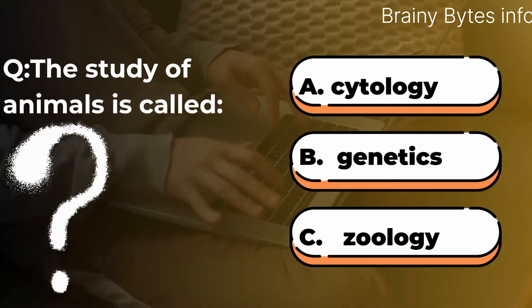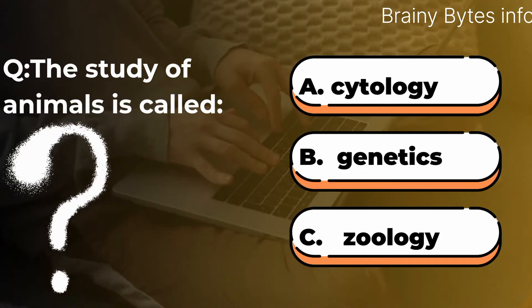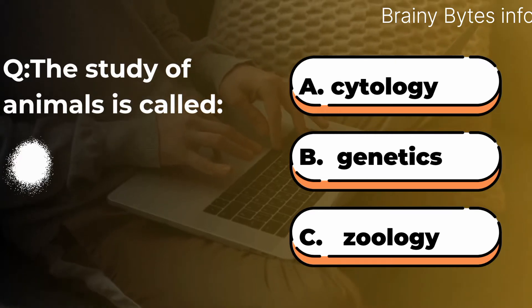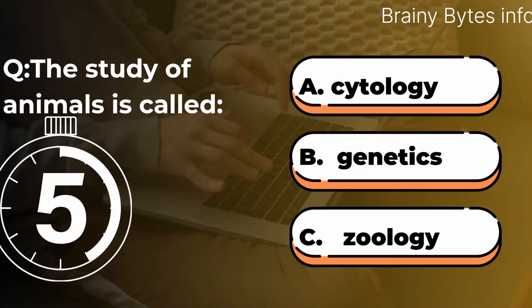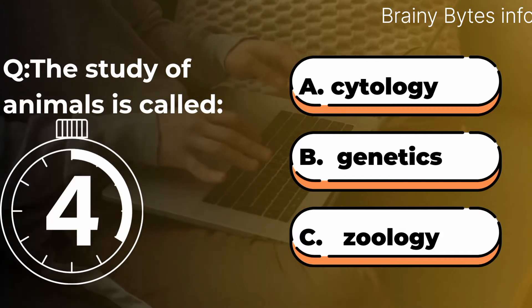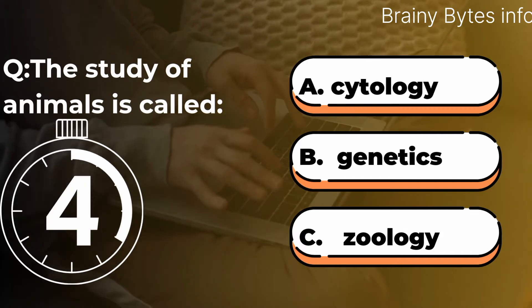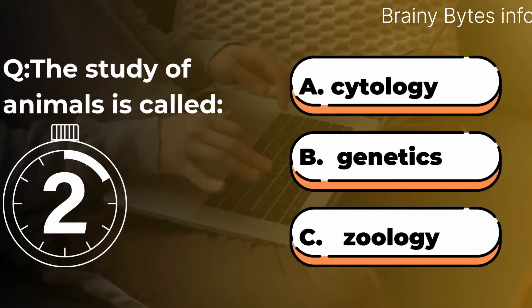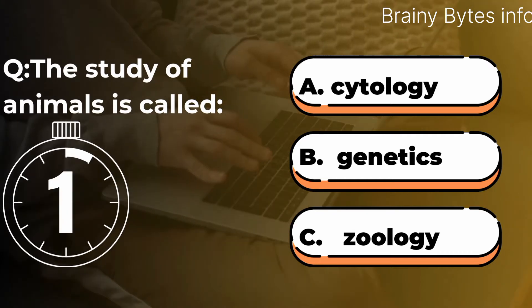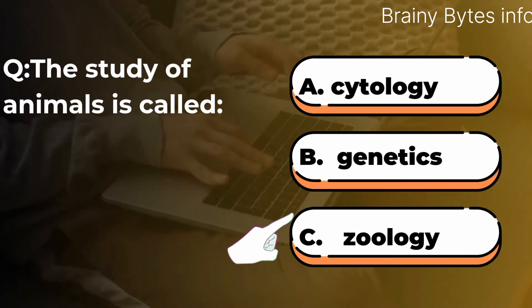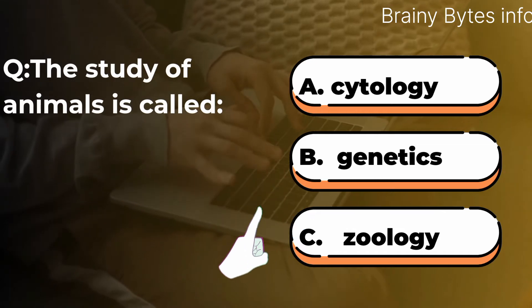The study of animals is called: A. Cytology, B. Genetics, C. Zoology. Answer: Option C, Zoology.